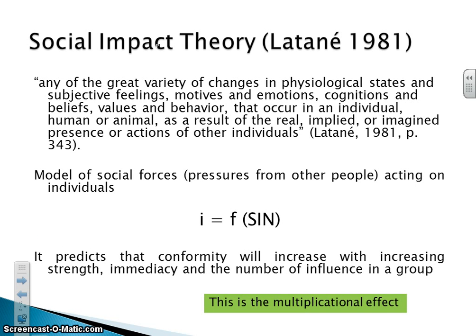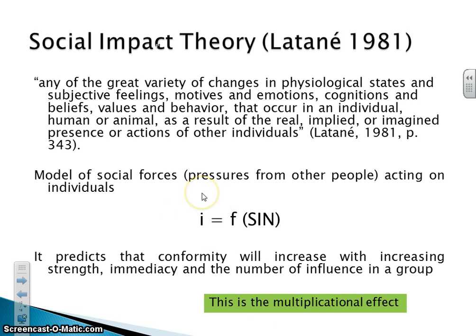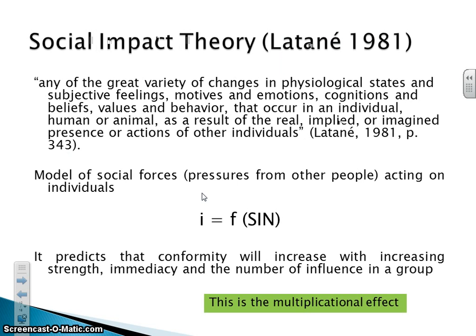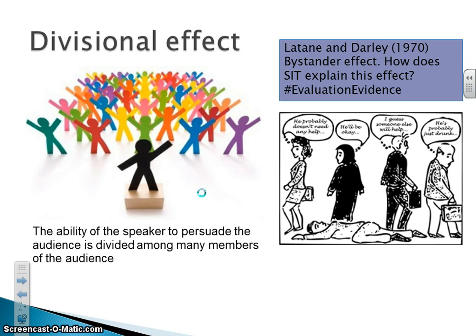Social Impact Theory by Latane puts this into a mathematical formula. The impact is a function of strength times immediacy times number. Through this formula, we get a numerical value for what sort of impact people have on you — the multiplicational effect. The greater the strength, the greater the immediacy, and the greater the number, the more effect it will have on you.